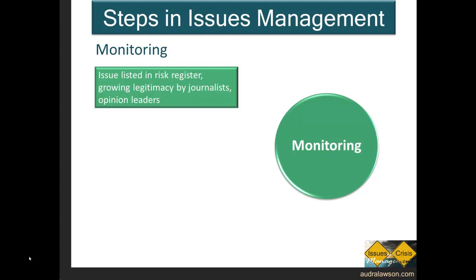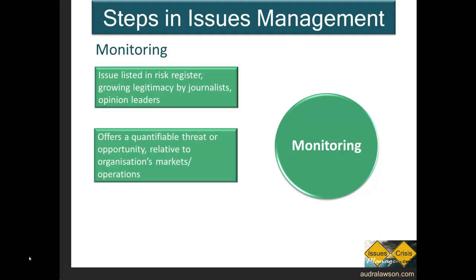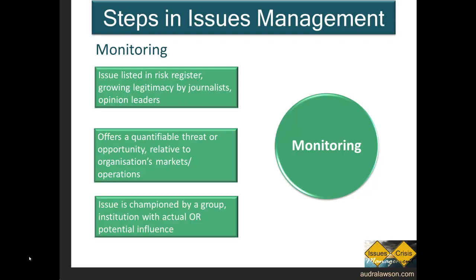They're also a way to track the action taken. The second criterion is that the issue has to offer a quantifiable threat or opportunity in terms of the organization's markets or operations. Because issues management is about the allocation of resources, what is monitored needs to have some measurable impact. Finally, the issue ought to be championed by a group or institution with actual or potential influence — issues connected only to moral stakeholders shouldn't be prioritized unless there's a substantial risk or opportunity, based on Heath's recommendations.